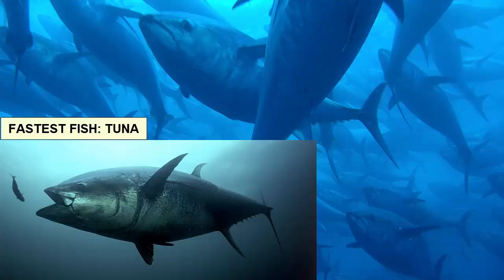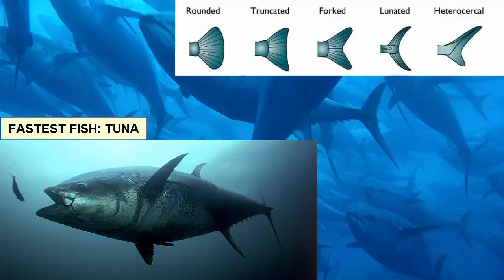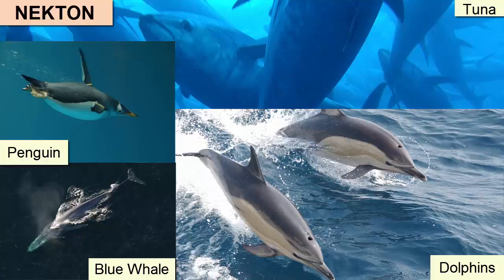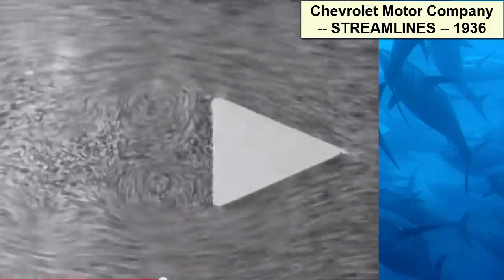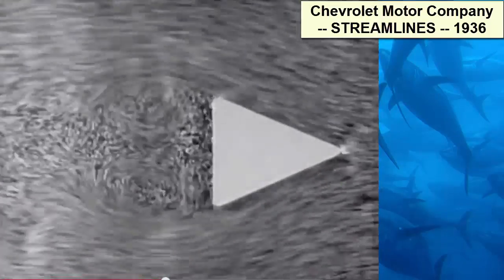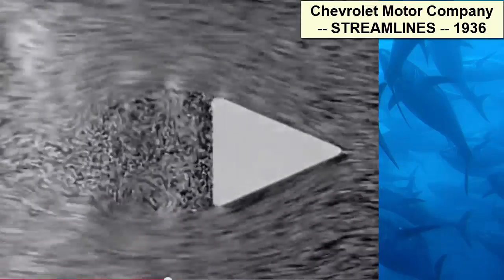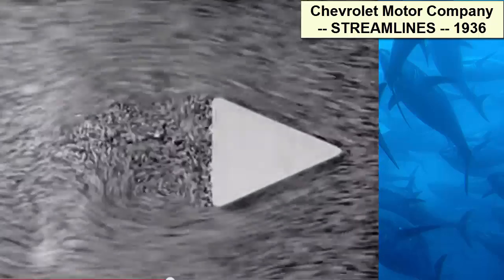Additional adaptations include retractable fins, powerful oxygen-rich muscles to provide propulsion, and aerodynamically shaped caudal or tail fins. The goal for all nekton — organisms that swim freely through the oceans — is to overpower water's viscosity and minimize drag to increase speed. A non-streamlined shape builds up pressure at its leading edge, causing resistance.